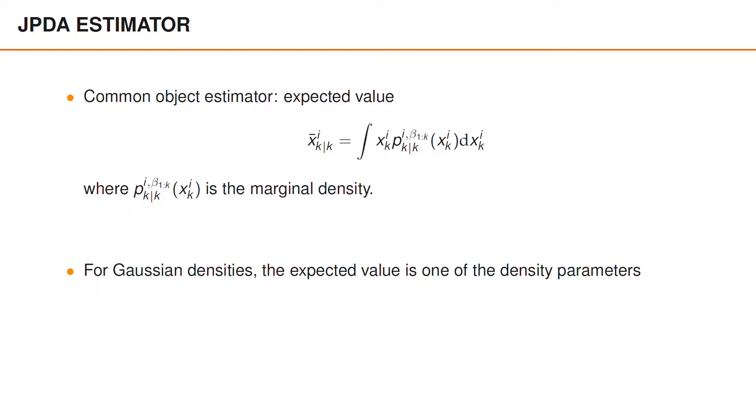Just like in GNN, we may wish to compute object estimates, and for JPDA filters, the expected value is a common choice for the estimator. So again, for Gaussian densities, this is a convenient choice, because the expected value is one of the two parameters of the Gaussian density.